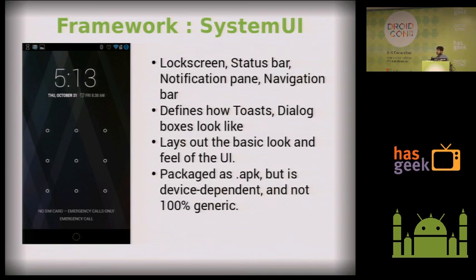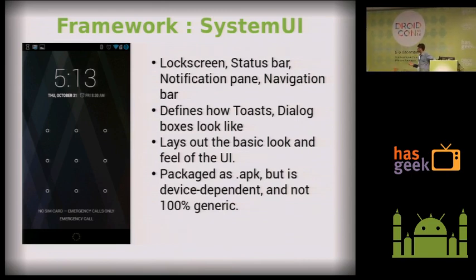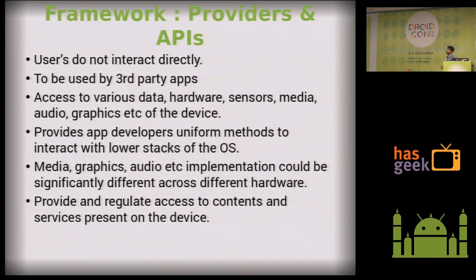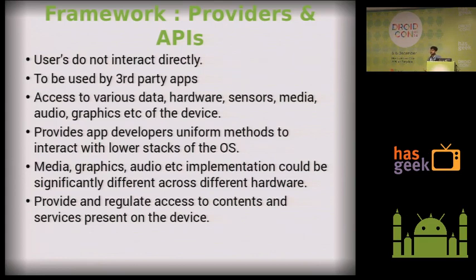Just one level below apps is the System UI or the framework, which handles the UI part. This defines everything: how buttons look, how checkboxes look, how the navigation bar looks, how your lock screen looks. This framework is basically Android OS's abstraction layer for the graphical side. The other part of the framework is your providers and APIs — when developing apps, all your hardware is abstracted to you, like accessing sensors via classes that abstract them to you.